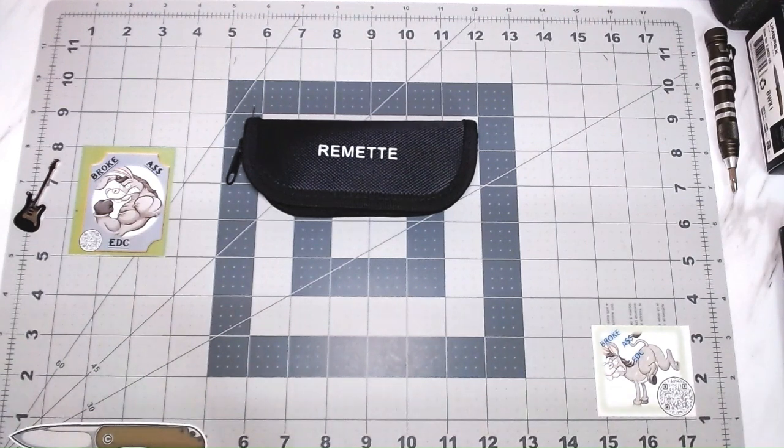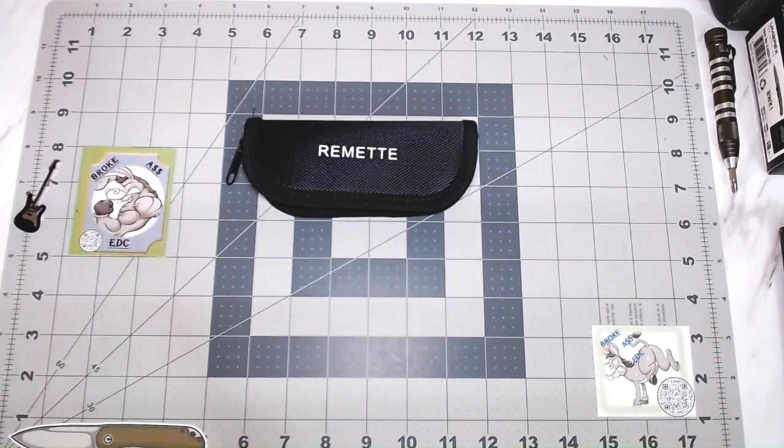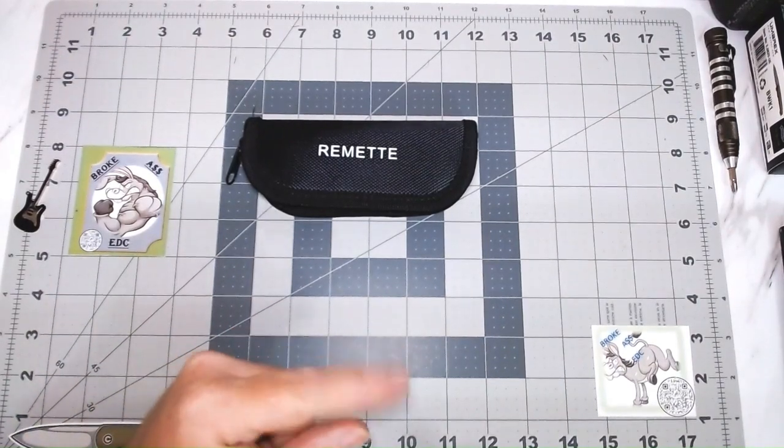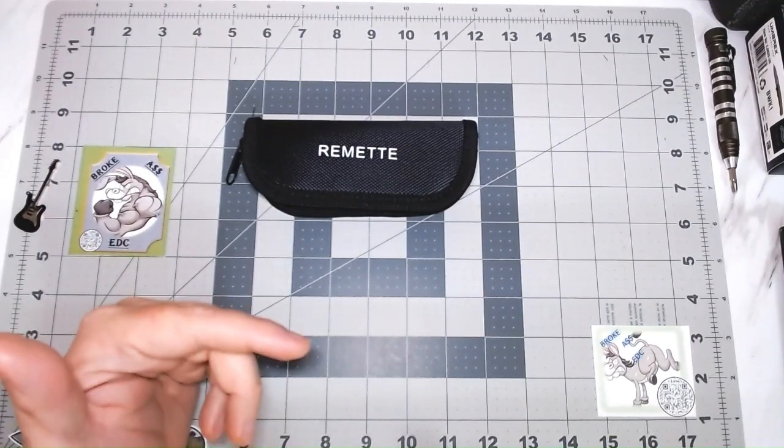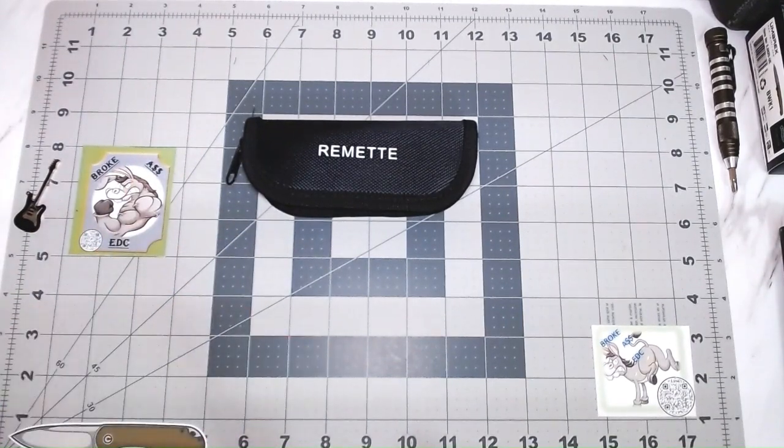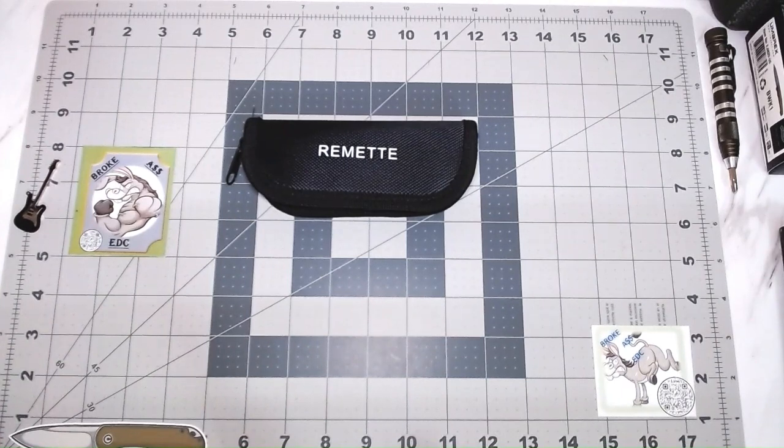Welcome back to Broadcast EDC, home of the working stiff's everyday carry. Got another one here from Amazon. I got it in this morning and I'm doing this real quick, trying to get it up because it's on a lightning deal. It's usually like 55 bucks, right now it's 46, and if you look real close there's like a 5% coupon. I got mine for like 30-something bucks.